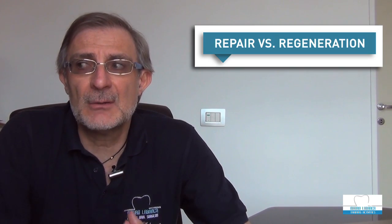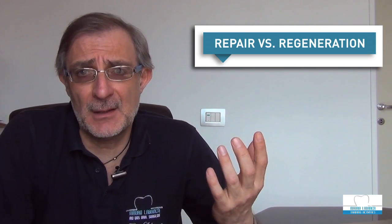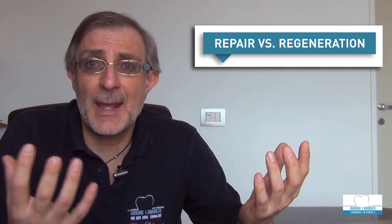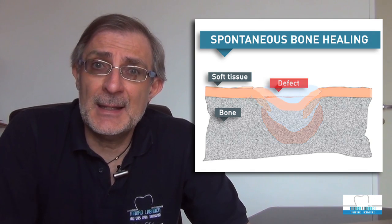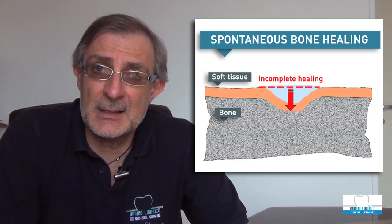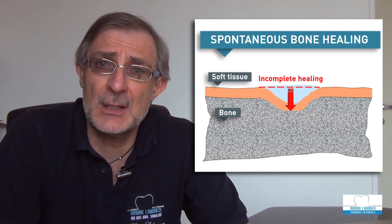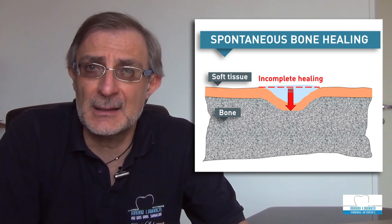As Albert Einstein says, we have to start from the biological point of view in order to understand why we have to put our biomaterial inside our defects. We need to keep under consideration a main difference between regeneration and reparation. If we leave a defect alone we still have a good healing, but the healing in this case will be incomplete or imperfect because of the soft tissue that will grow inside the defect.